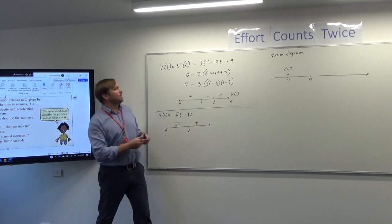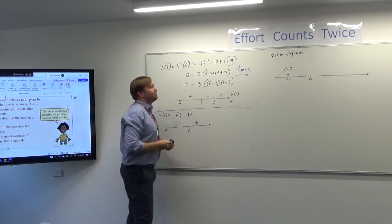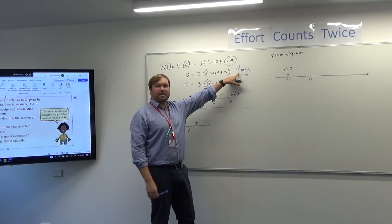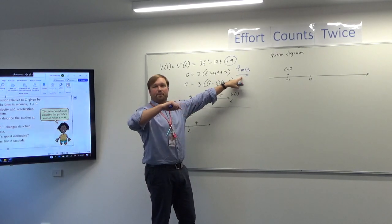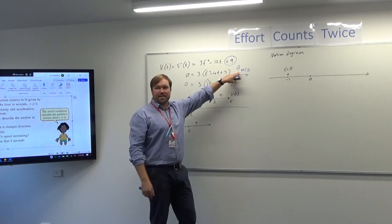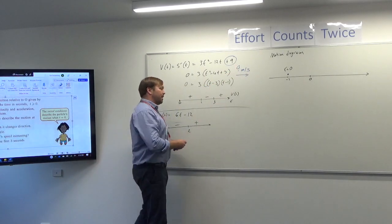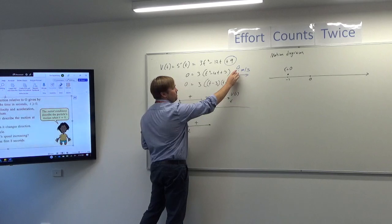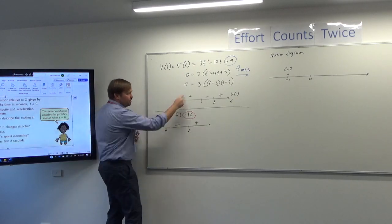This particle is moving at 9 metres per second to the right. If acceleration is zero, the velocity never changes. If the acceleration was positive one, after one second the velocity would have changed to 10 because we're going up one metre per second per second. But our acceleration is negative at the start, meaning it's not going to stay at 9 m/s to the right — it's going to slow down, because the signs are opposing each other.